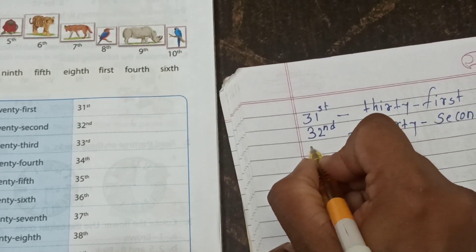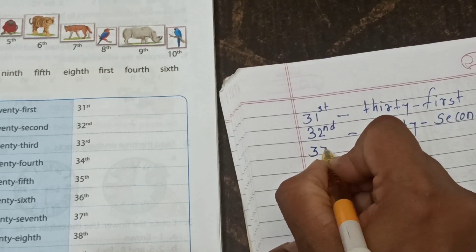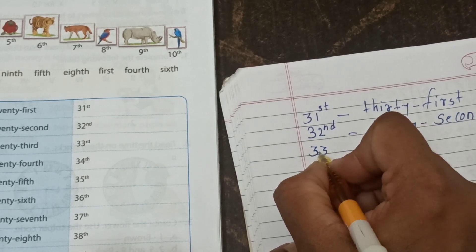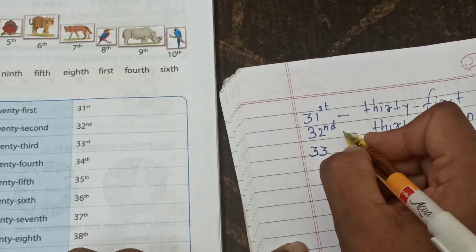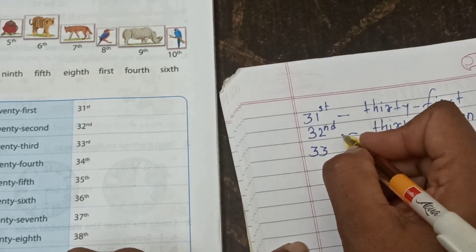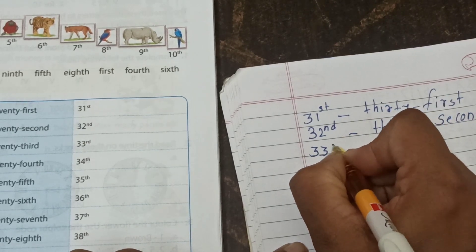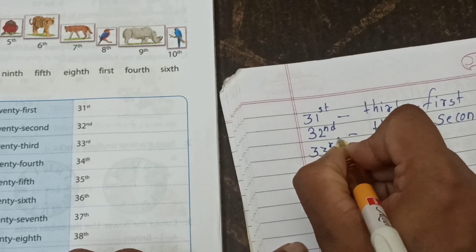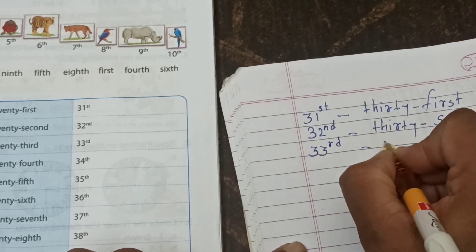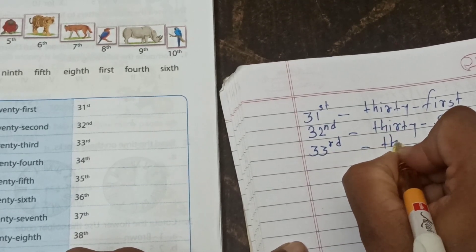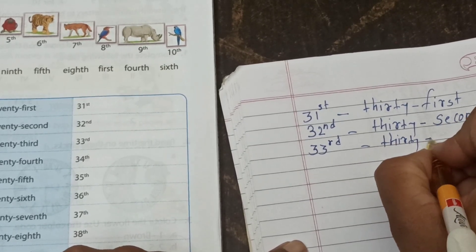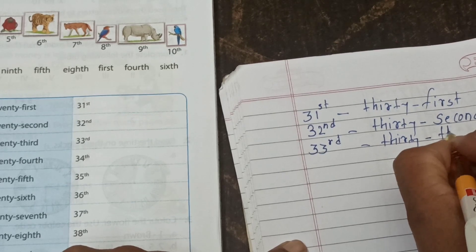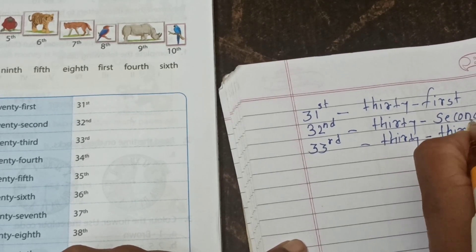Then 33, how we read? 33rd. R-D, write down here. 30: T-H-I-R-T-Y. 30, 3rd: T-H-I-R-D.